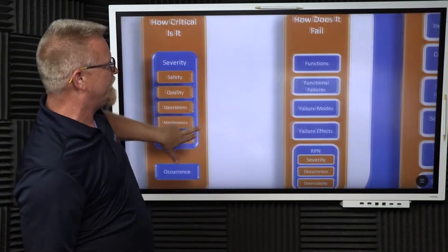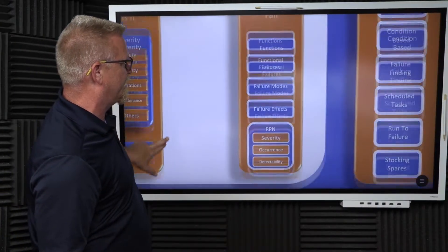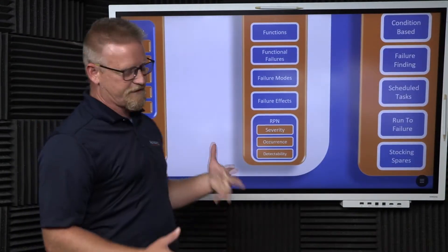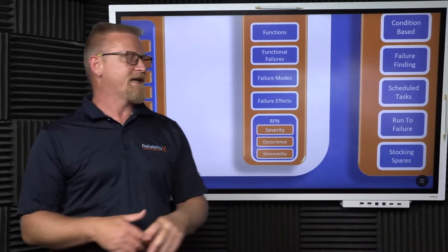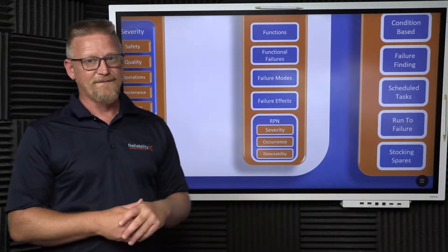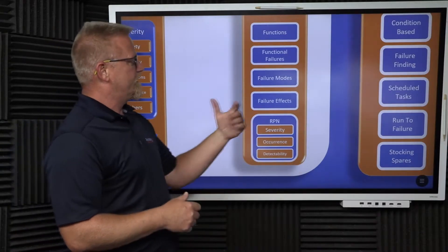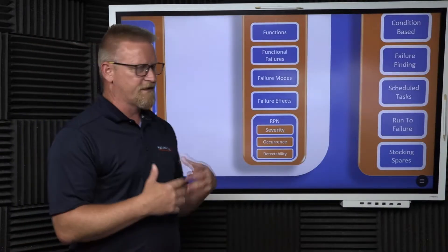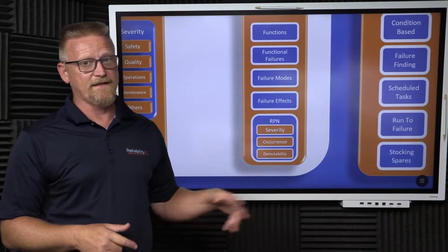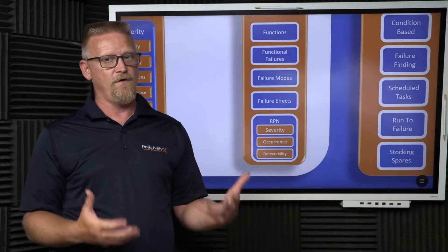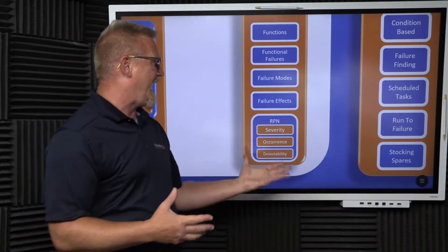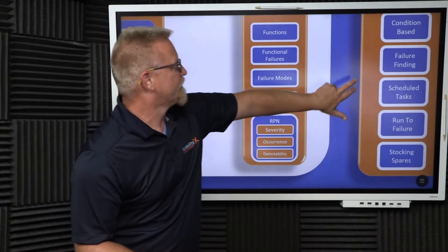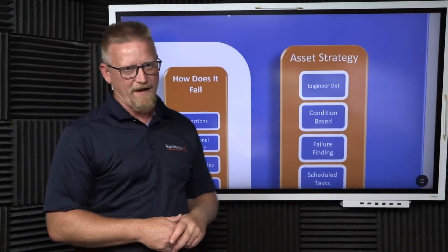Based on criticality, we now want to understand how the asset fails. In the section of how does it fail, we want to first identify all the functions of an asset and identify the functional failures and failure modes. We then look at all the effects of those failures, and we develop what's called a risk priority number. Risk priority number is severity times occurrence times detectability. So it's very similar to our criticality matrix with the exception of we've added detectability. How likely are we to know it's failing before it fails?